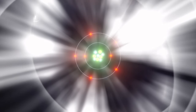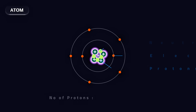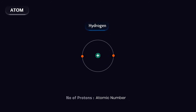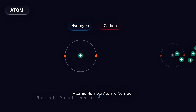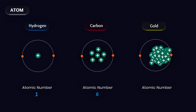Every atom contains protons, neutrons, and electrons. The number of protons in an atom is called its atomic number. For example, a hydrogen atom has only one proton, so its atomic number is 1. A carbon atom has 6 protons, so its atomic number is 6. A gold atom has 79 protons, so its atomic number is 79. The number of protons in an atom determines the kind of atom or element.